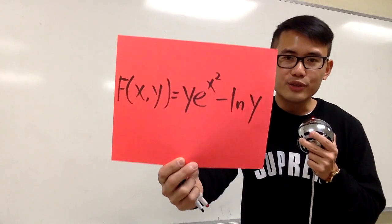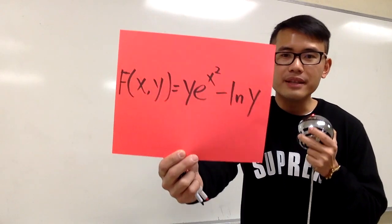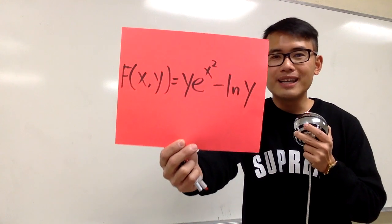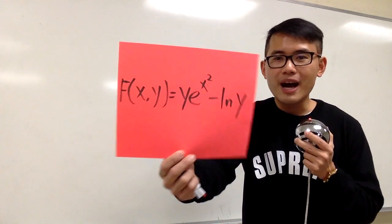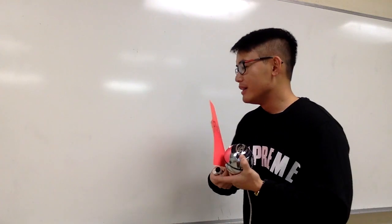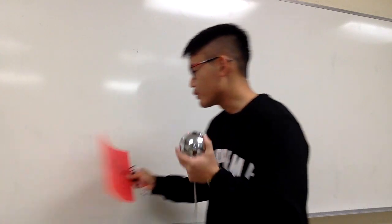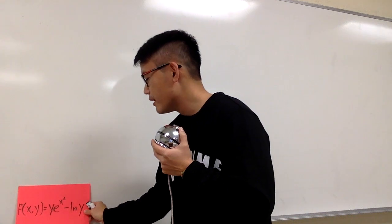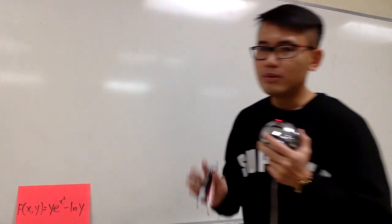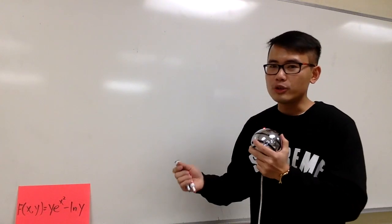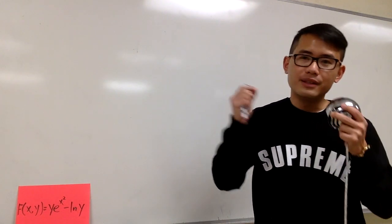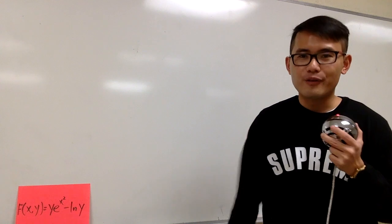Suppose we have the function f of x, y is equal to y times e to the x squared and then minus ln y. And you really have to remember the connection between exact equations and the total differential.